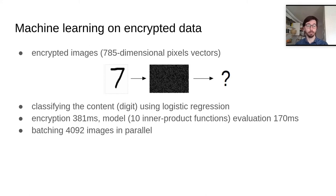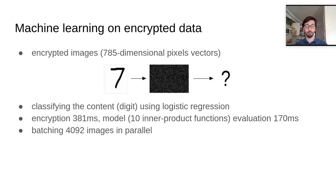What we observe is that it takes roughly 381 milliseconds to encrypt such an image and then evaluate the machine learning model that was learned before. It takes only 170 milliseconds to evaluate 10 inner product functions. Notice also that one can encrypt multiple images in one ciphertext without increasing the size of the ciphertext. In fact, you can encrypt up to 4092 images in parallel in one ciphertext and then evaluate the model on all images simultaneously without worsening these performance numbers.